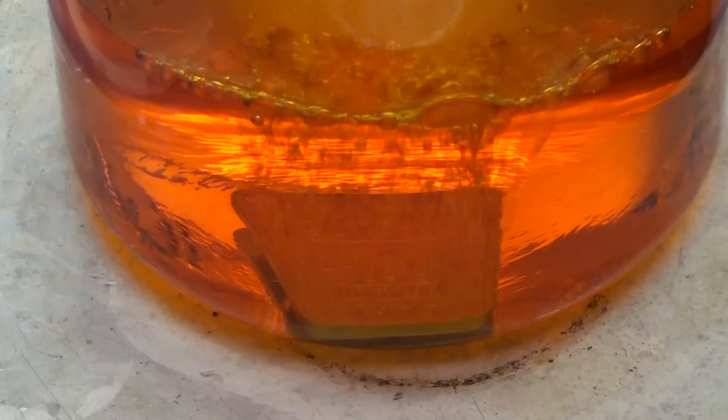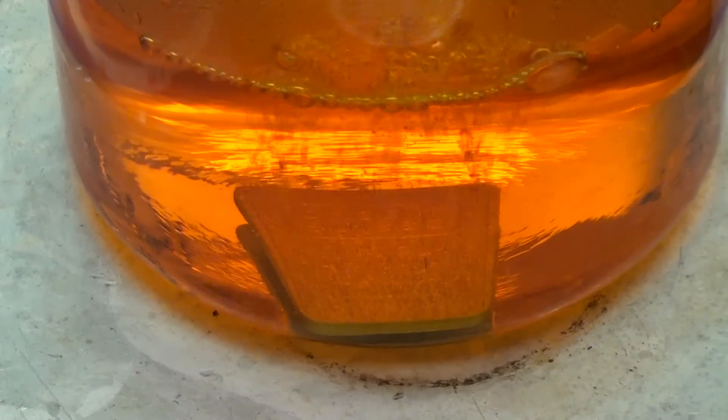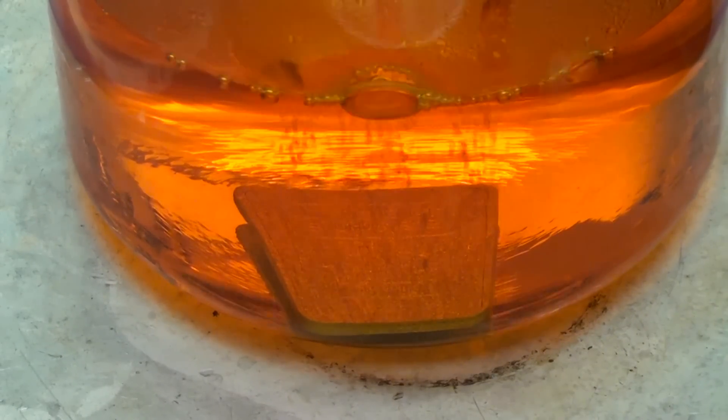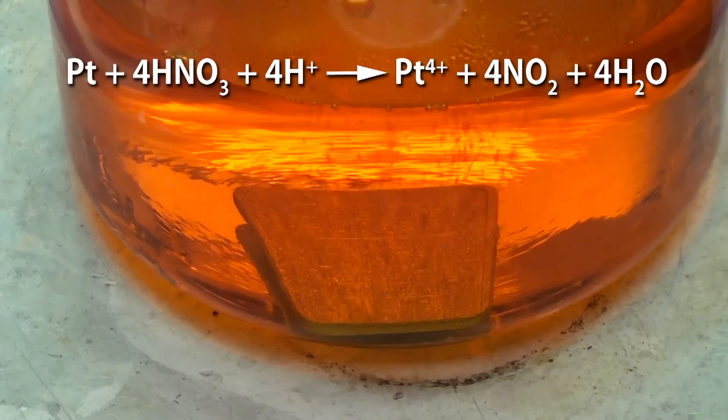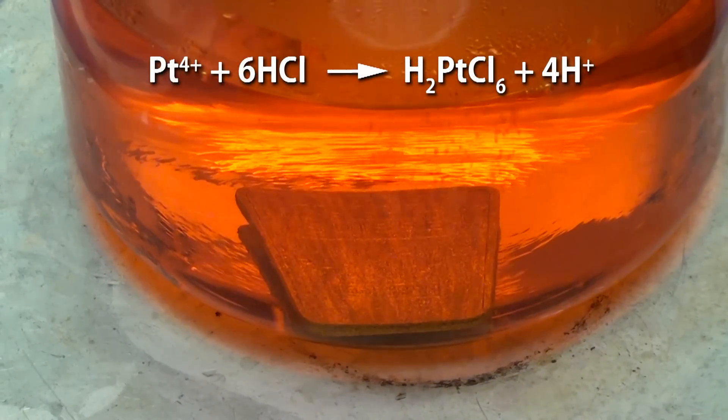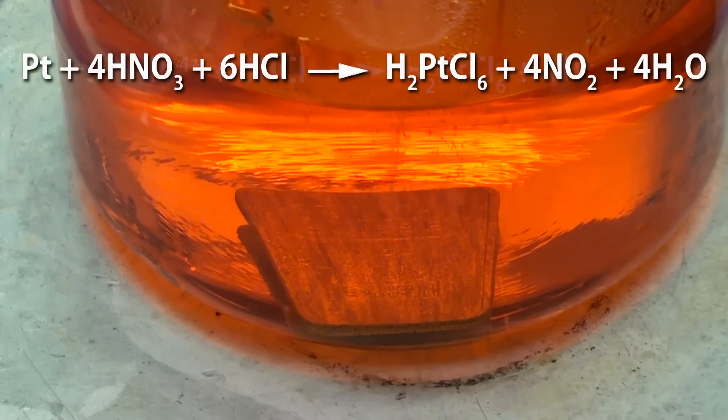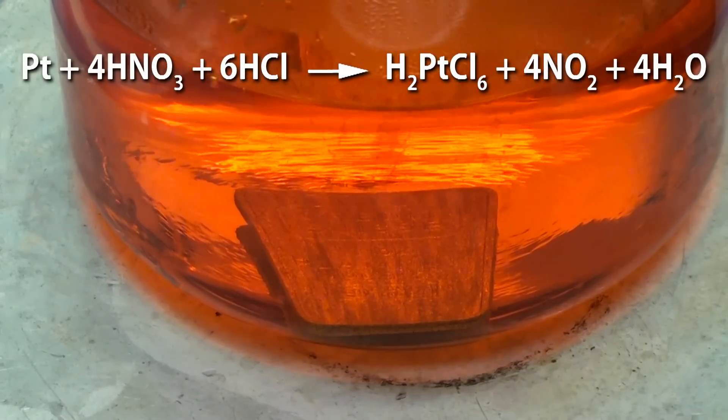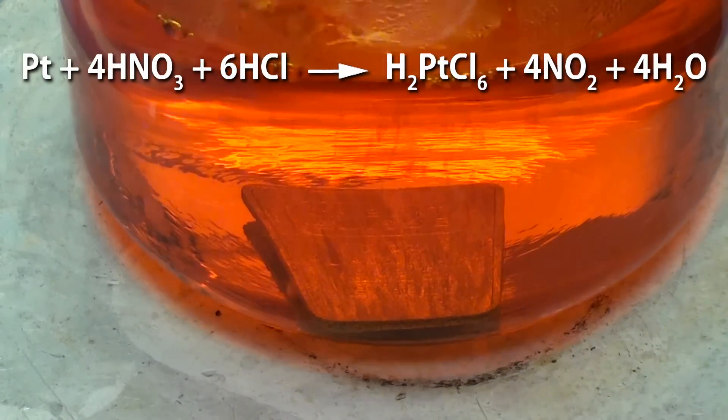The solution is heated since the dissolution of platinum is extremely slow at room temperature. What's happening is the platinum is reacting with nitric acid to produce platinum ions that are then complexed with chloride ions and dissolve away. The overall reaction produces hexachloroplatinic acid, also known as chloroplatinic acid.